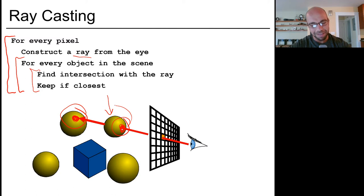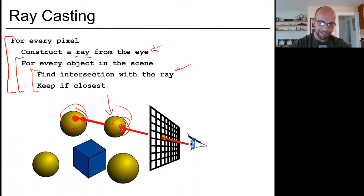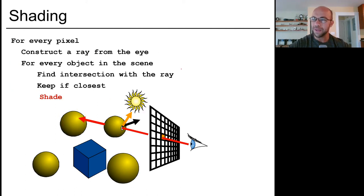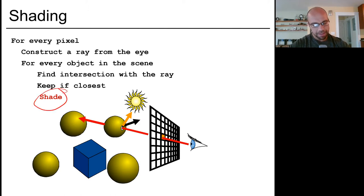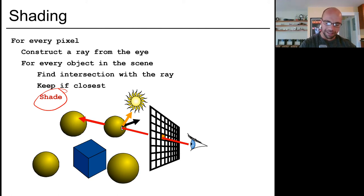Obviously there are a lot of details we haven't filled in yet. We need to talk about how to construct the ray, how to intersect rays with objects, and there's one additional step: deciding what color to put at that pixel once we've figured out what object we're shading. For now, we're going to give you one simple shading model so we can get started, and later talk about different materials.